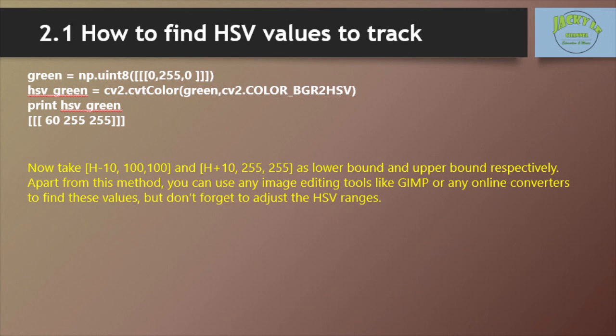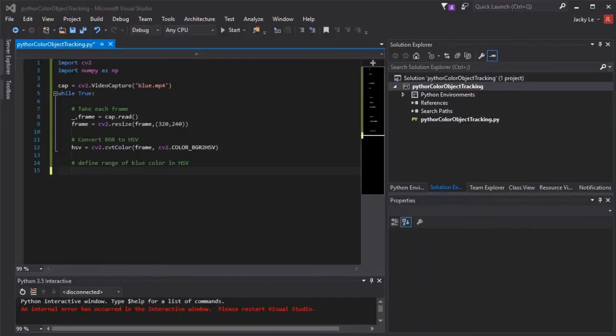For example, to find the HSV value of green, try the following commands in the Python terminal. Then take H minus 10, 100, 100 and H plus 10, 255, 255 as the lower bound and upper bound respectively.